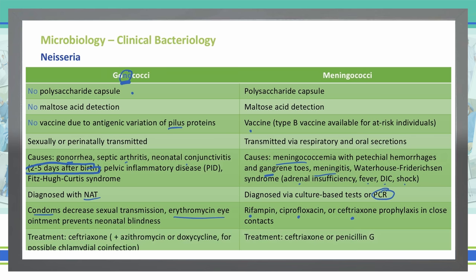For treatment, ceftriaxone is going to be our main treatment for both gonococci and meningococci. With gonococci, we also add azithromycin or doxycycline because we oftentimes see gonococcal infections alongside chlamydia. They are often co-infections, so we'll give ceftriaxone plus azithromycin or doxycycline to help cover both potential infections. The AXE in ceftriaxone helps us remember that it crosses the blood-brain barrier, making it effective for meningococcal meningitis.